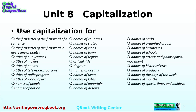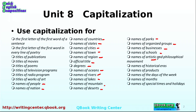Titles of publications, movies, poems, television programs, radio programs, and works of art. Names of people, countries, nations, states, cities and towns, names of regions, official titles, degrees. Names of oceans, rivers, lakes, mountains, and deserts all need to be capitalized. Names of parks, organized groups, businesses, schools, artistic and philosophical movements, historical eras, names of products, days of the week, days of the months, holidays and special occasions, and special times — they all need to be capitalized.